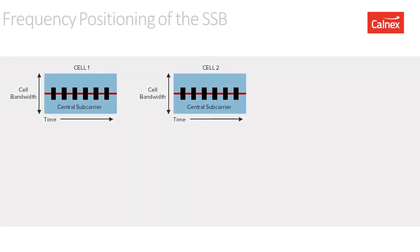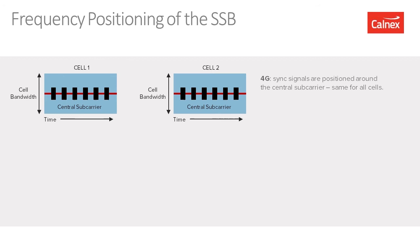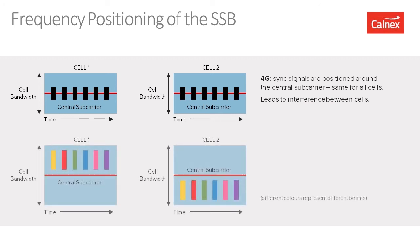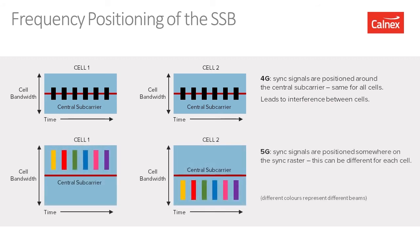With 4G, sync signals were positioned around the central subcarrier and were the same for all cells, as shown at the top of this diagram. With 5G, they can be anywhere in the raster, and you can also have multiple carriers or signals from multiple beams. This makes it a little more challenging to find, capture, and measure these signals.